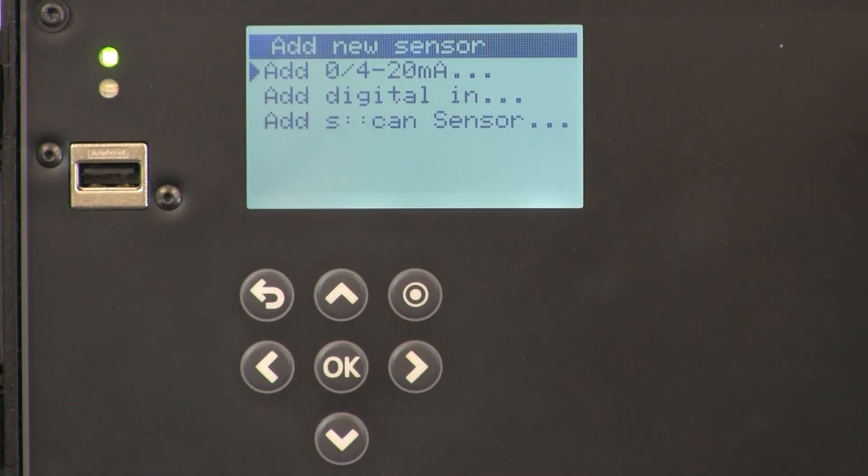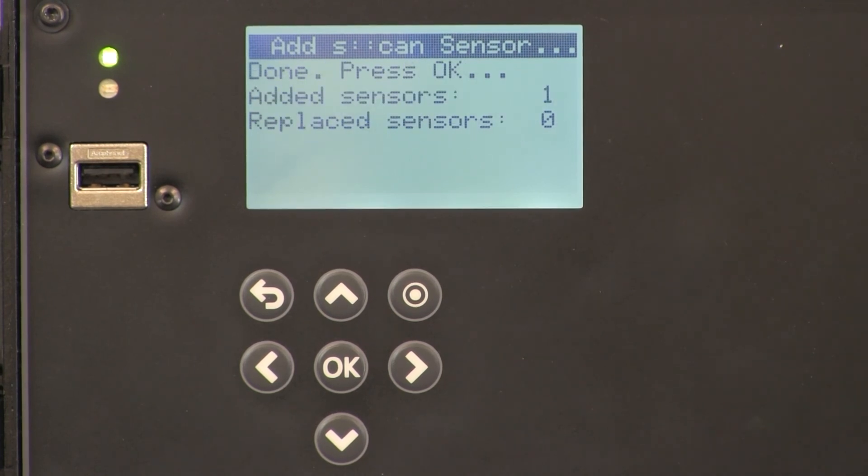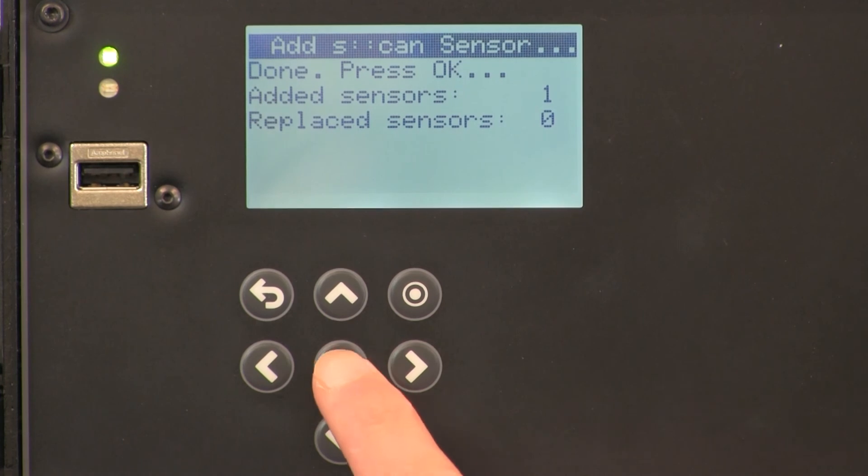Here we have three options for analog input signal, a digital input, and the SCAN sensor. So let's go and click the SCAN sensor. Now it's going to search for predefined addresses on the system. Now that the controller has identified the sensor, we can hit OK.